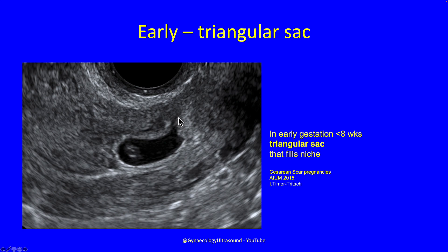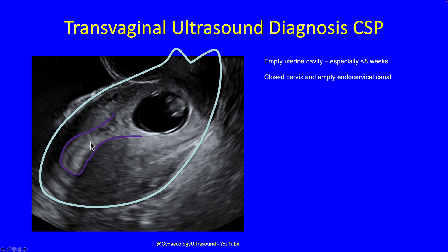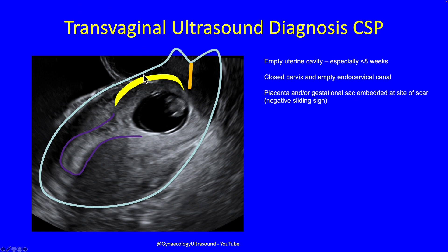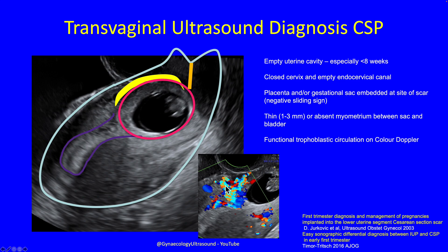The first thing you might see is a little triangular sac — you'll only see that at less than eight weeks gestation. You need to see an empty uterine cavity, especially at less than eight weeks; an empty endocervical canal with a closed cervix; the placenta or gestation sac embedded at the site of the scar with a negative sliding sign — when you gently press with the probe this doesn't move; a very thin or absent myometrium between the sac and the bladder; and functional trophoblastic circulation on color Doppler set at 0.9 or 0.6, looking for vascularity showing the trophoblast is implanted into the myometrium.